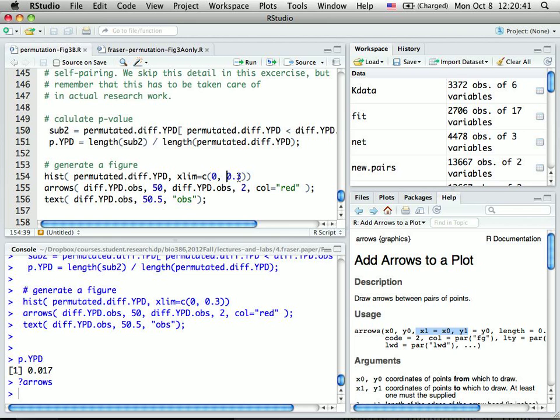Okay. And then the text command is just to write a label on top of my arrow. Okay.